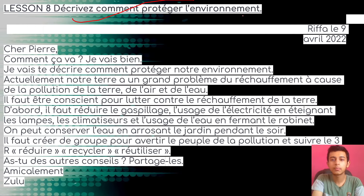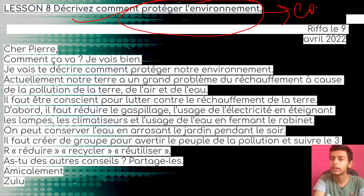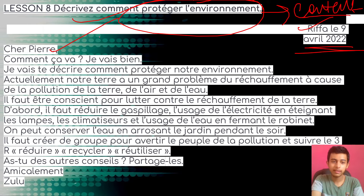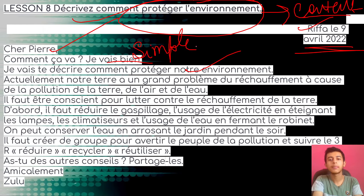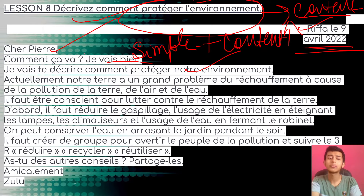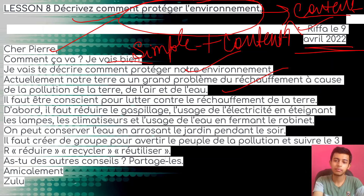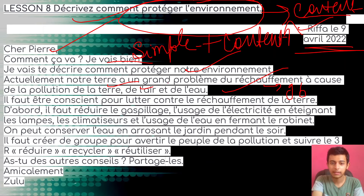The last letter is about how we can save our environment. This can be twisted but the content remains the same — how to conserve or preserve our planet. It starts with 'FIFA, le 9 avril 2022'. 'Chère' — how can we save our planet? 'Je vais te décrire' — I will describe to you how we can preserve our planet. There is a big problem: the pollution of the earth and the warming — which means global warming — because of pollution of land, air, and water.